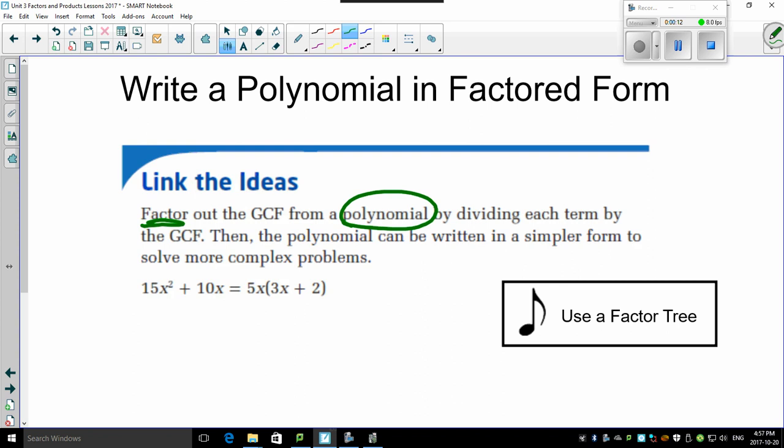And the way you do this is you find out what the GCF is and then divide it. Divide every term by that GCF, and then the polynomial can be written in a simpler form.